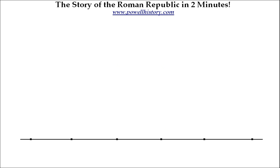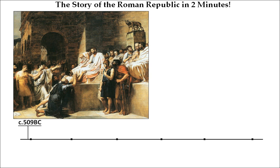The story of the Roman Republic begins circa 509 BC with the rejection of monarchy by the Romans, involving the justly famous story of Lucius Junius Brutus, one of Rome's first consuls — its new executive officers — who was so committed to rejecting the tyrannical essence of monarchy that he executed his own sons for their part in a conspiracy to return Rome to the rule of one.